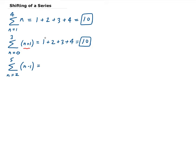So again, let's check. When n is 2, we're going to get 1. When n is 3, we're going to get 2. When n is 4, we get 3. And when n is 5, we get 4. So we get 10 here.